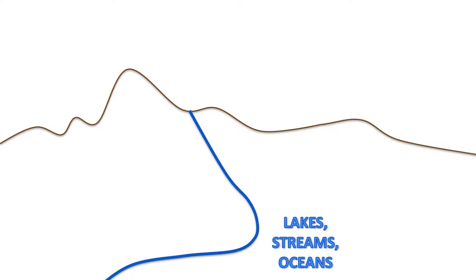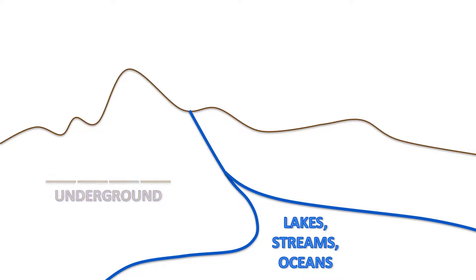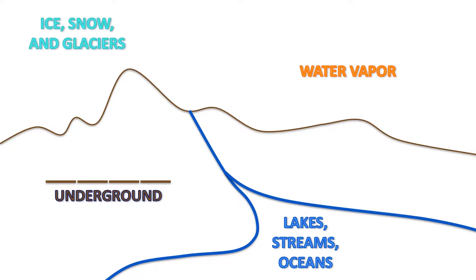Water exists in many different forms. Some of it is in lakes, streams, or oceans, and some of it is underground. Some is water vapor in the atmosphere. Some is in the ice at the poles and in the snow and glaciers at the tops of high mountains.